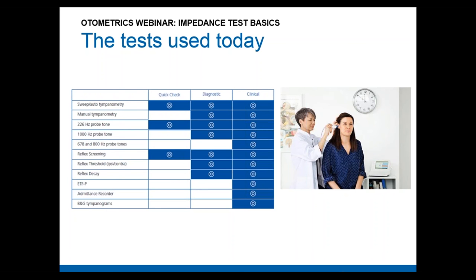Finally, in the high-end or clinical segment, you find all the tests described before, plus additional probe tones like 678 Hz or 800 Hz. You will also find tests for the Eustachian tube, BNG tympanograms, and the admittance recorder — a test that records admittance without stimulation. The industry generally provides increasing test packages across segments, with the high-end offering the most comprehensive set.